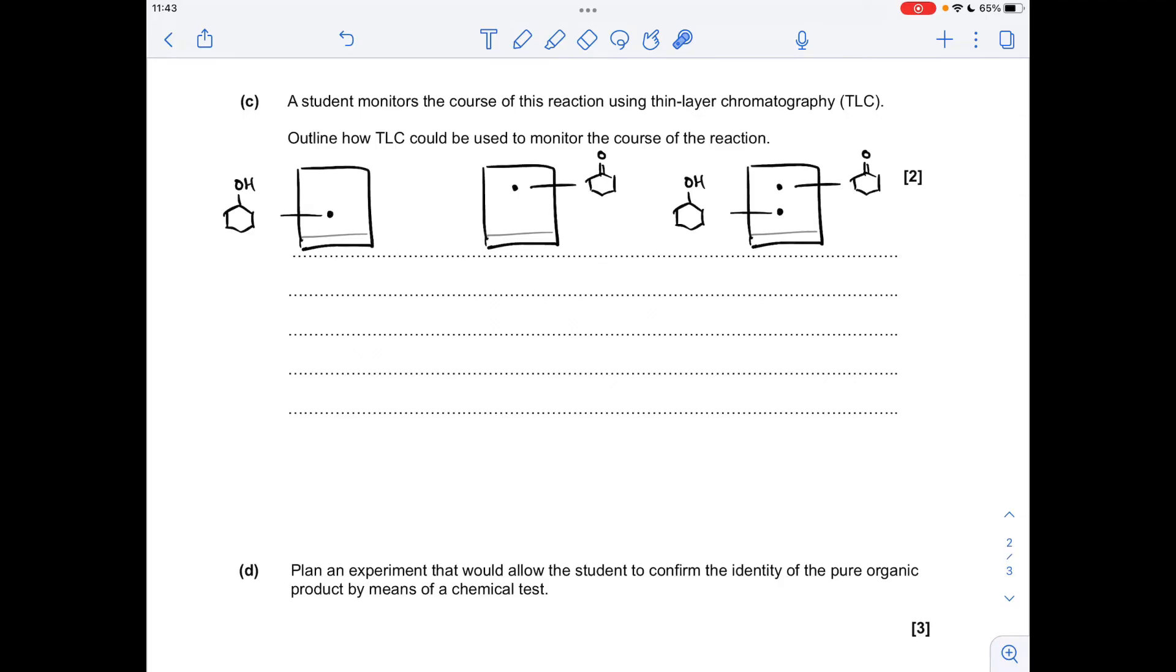Moving on to part C. So to help me explain this one I've drawn up some TLC plates. So let's suppose this is a TLC plate for pure cyclohexanone so it gives a spot there. Pure cyclohexanone gives a spot there. So as we're doing this reaction if we've got both substances present we're going to have two spots. So what we could do is we could take samples out of the reaction mixture at regular intervals. Run the TLC plate for the sample. So let's suppose we've got that there so you can see we've got both substances present because we're comparing them to those so we know that the reaction is not complete yet.